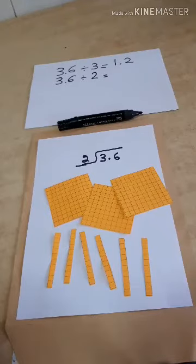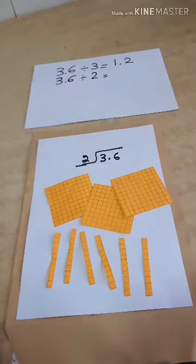Now, what if I had 3.6 divided by 2? What should we do?